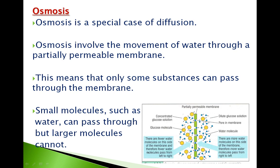Looking at the diagram, in the middle is the selectively permeable membrane shown in green. On one side there is a concentrated glucose solution shown by the yellow glucose molecules. On this side there are fewer water molecules, so fewer water molecules pass from left to right. On the other side there are more water molecules, so more water molecules pass from right to left — the blue dots represent water molecules.